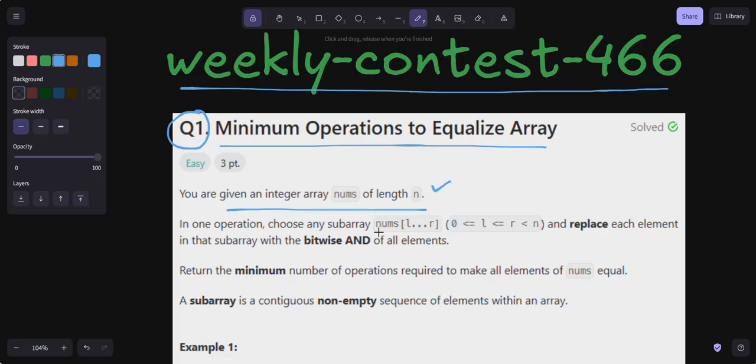In one operation, choose any subarray nums[l...r] where l ≤ r, r < n, and l ≥ 0, and replace each element in that subarray with the bitwise AND of all the elements.